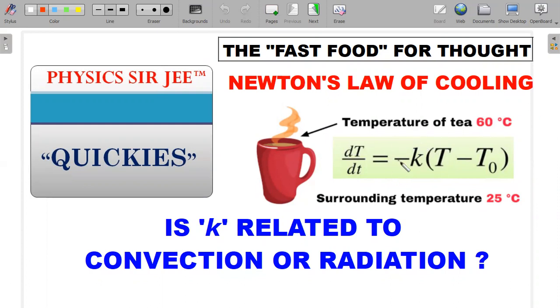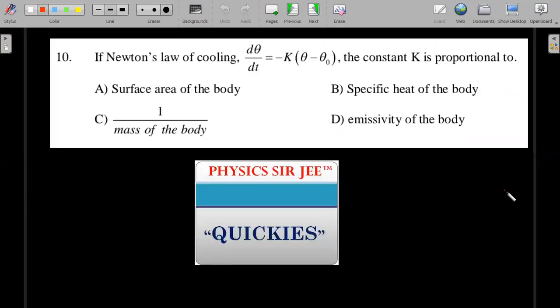Is it related to convection or radiation? Here's the question that helps us understand that: In Newton's law of cooling, dθ/dt = -k(θ - θ₀), where θ is the temperature of the body cooling and θ₀ is the temperature of the surroundings or the ambience. The constant k is proportional to—and here we have four options. One or more than one may be correct.